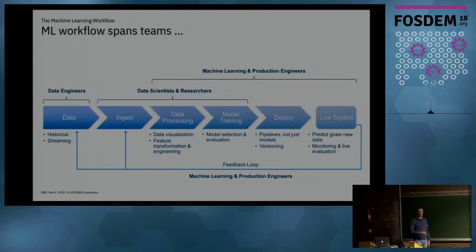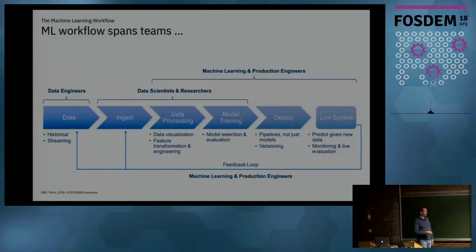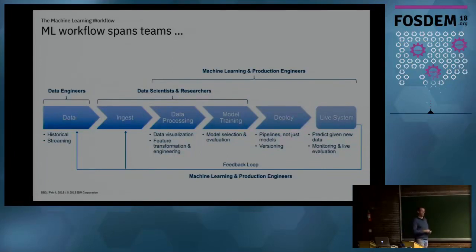The traditional data science or machine learning workflow: you take your data, ingest it, apply data exploration, feature transformation and engineering, and get it into a format to feed into your model. Model training — selecting the model and doing pure machine learning — is only a small piece, though a critical one. Then data scientists throw it over the wall to production engineers, who need to deploy it with all the requirements for scalability, uptime, speed, performance, and monitoring.